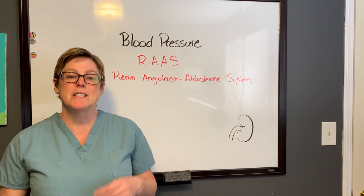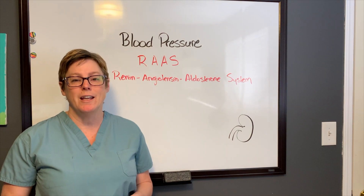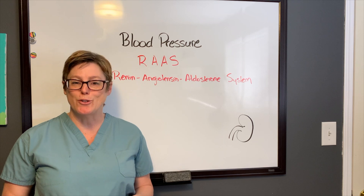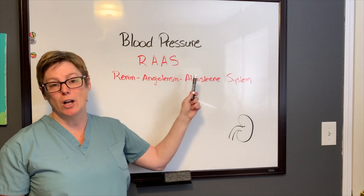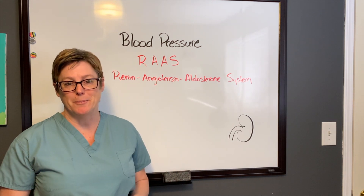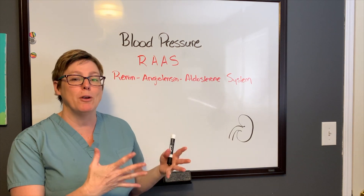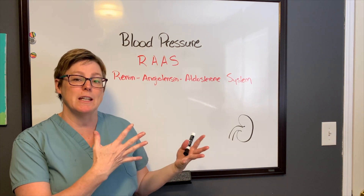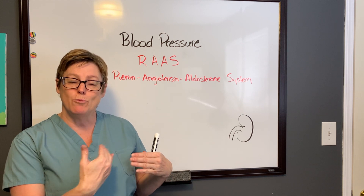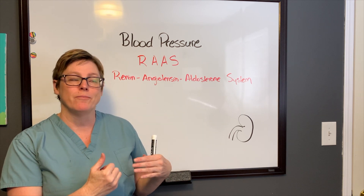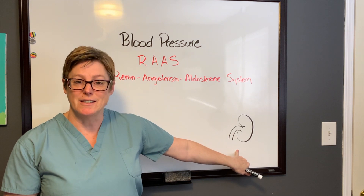Our second compensatory system is the renin-angiotensin-aldosterone system, or in short the RAS system. Unlike the baroreceptors that get their start in the cardiac system right off the aortic arch, this one actually gets its start in the kidneys.